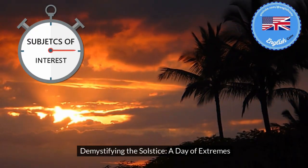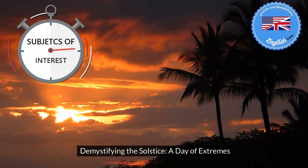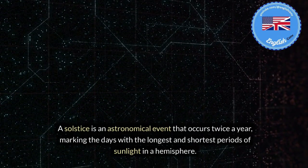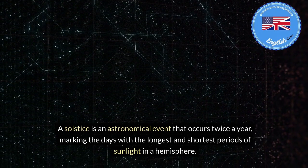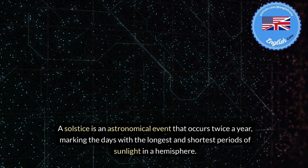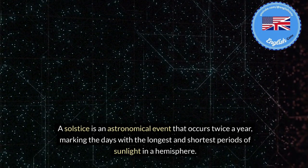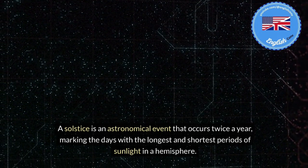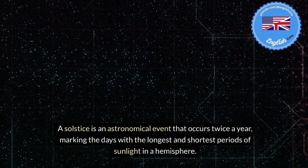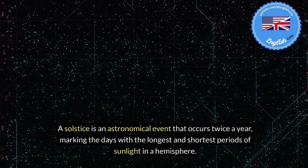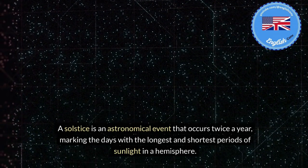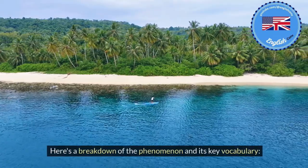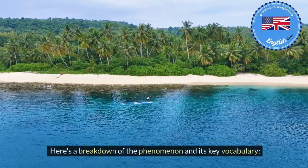Demystifying the Solstice: A Day of Extremes. A solstice is an astronomical event that occurs twice a year, marking the days with the longest and shortest periods of sunlight in a hemisphere. Here's a breakdown of the phenomenon and its key vocabulary.